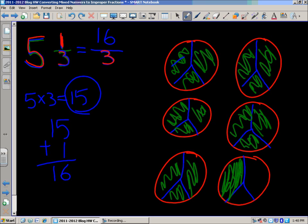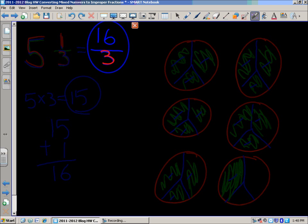Okay, so we have 1, 2, 3, 4, 5, 6, 7, 8, 9, 10, 11, 12, 13, 14, 15, 16 thirds. And that's exactly what you have over here. You end up with the same answer, 16 thirds.